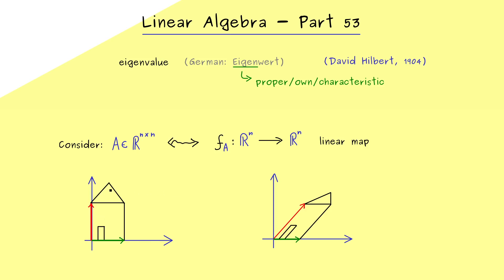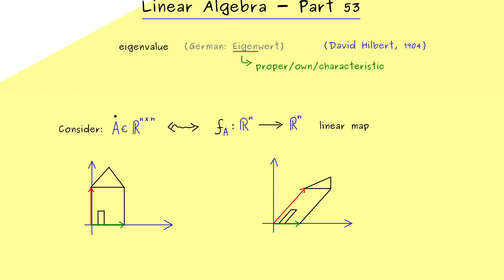And we see a lot of points from the house are shifted and moved. However, we also recognize that this one direction here is not rotated in any way, it's just scaled a little bit. And in fact, this is exactly the question we ask when we deal with eigenvalues and eigenvectors.